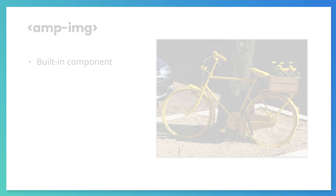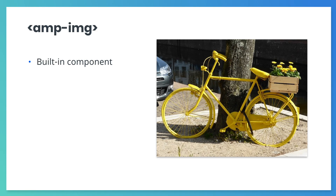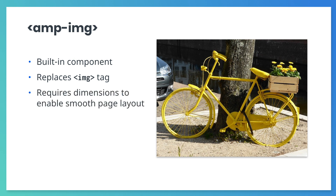The AMPImage tag is a built-in component — you don't need to load any additional JavaScript for it to work. The goal of the AMP image tag is to improve on the standard HTML image tag. AMP makes you specify the size of all the components in advance, and images are no exception. It wants to know the layout of the entire page in advance, so it can keep the content from jumping around as elements load.